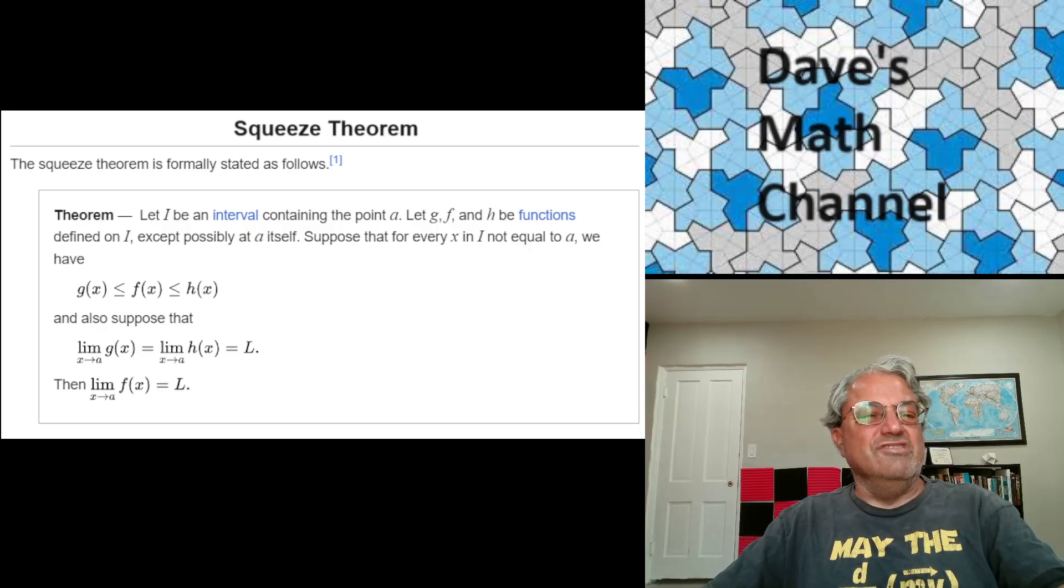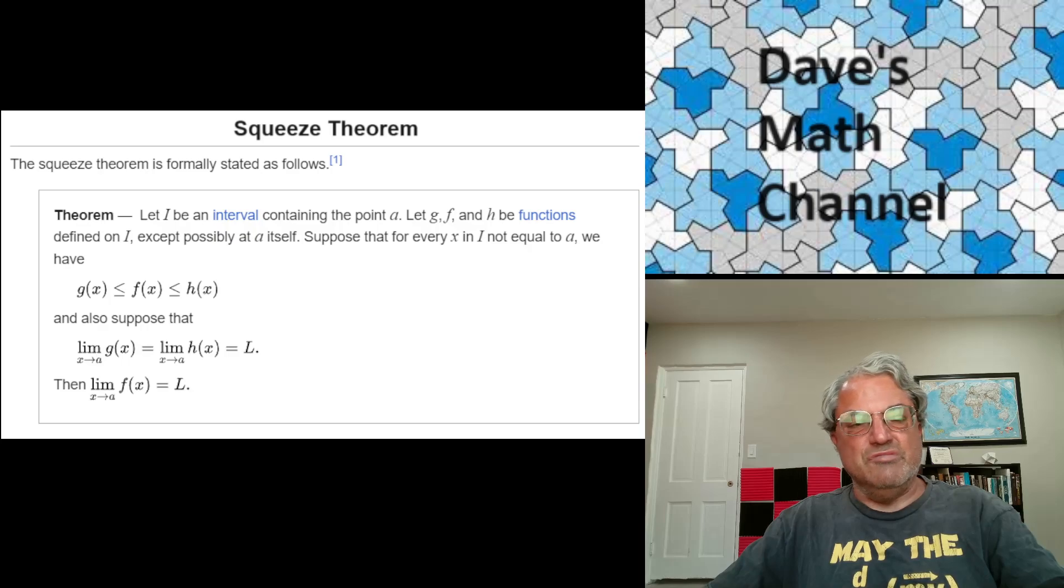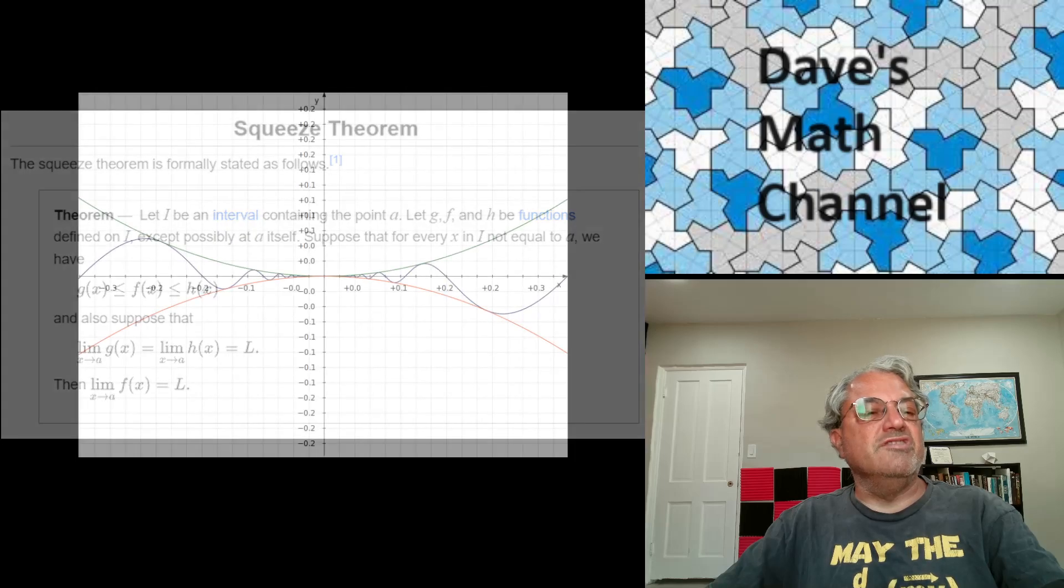It's squeezed from below by L, and it's squeezed from above by L. So it has to equal L. It has no other choice. So I think intuitively it makes perfect sense. I'm not going to prove it rigorously, because proofs involving limits can be pretty ugly. These can involve epsilon and delta, and I'd rather not do that today.